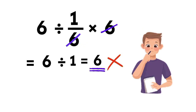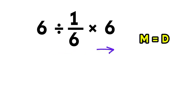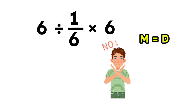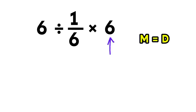Here is the right way. Multiplication and division have equal priority, so we must work from left to right — no skipping, no jumping. So we begin with 6 divided by 1 over 6, then we will handle the multiplication by 6.